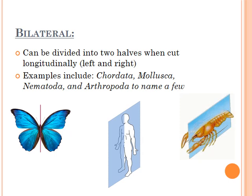Examples of this include chordata — so any organism that has a backbone — mollusks, nematodes, and arthropods like insects, crustaceans, and spiders, to name a few. Any time you have an organism that can be split directly down the center into two equal halves, that is what we consider bilateral.